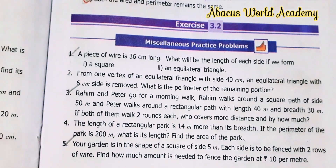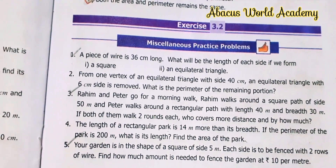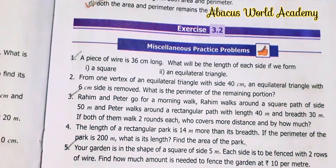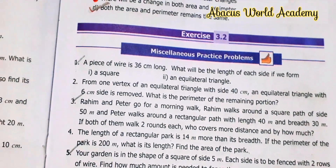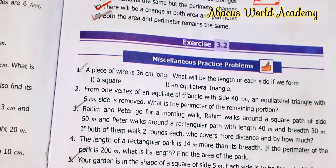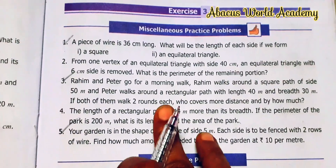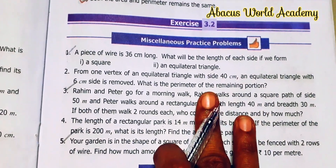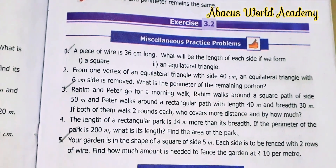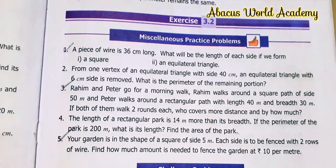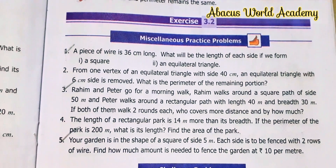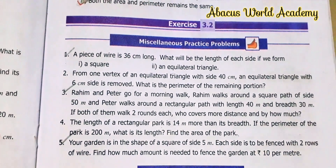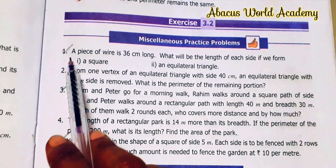Hi my dear students, welcome back to our channel Abacus World Academy. Students, no. 6 standard, Term 3, Chapter 3 - Perimeter and Area, Miscellaneous Practice Problems. Exercise 3.2. Before we go into the video, please subscribe to our channel, like, comment, and share.